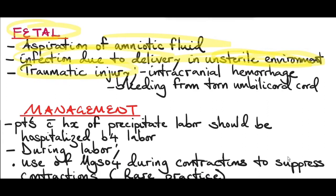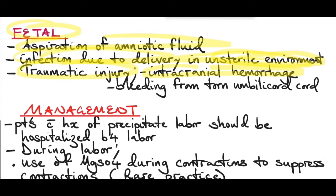There is also a risk of traumatic birth injuries to the fetus, like intracranial hemorrhage. In precipitate labor, there is not enough time for molding of the head, and molding normally protects and prevents the brain from intracranial stress or hemorrhages. If the patient delivers in a standing position, there is also risk of damage to the skull as well as bleeding from a torn umbilical cord.